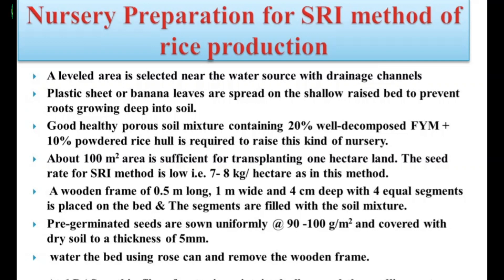A wooden frame of 0.5 meter length, 1 meter width, and 4 cm depth with 4 equal segments is placed on the bed, and the segments are filled with soil mixture. After filling, pre-germinated seeds are sown uniformly at the rate of 90 to 100 grams per square meter. After sowing, seeds are covered with dry soil, water is given with a rose can, and the wooden frame is removed.